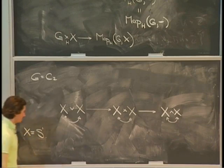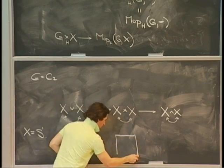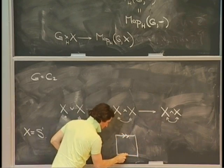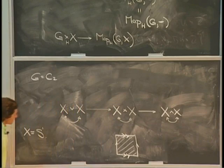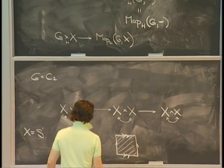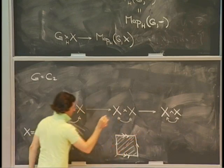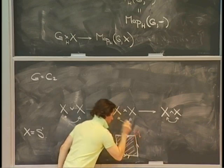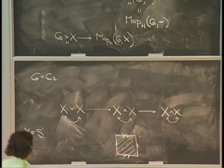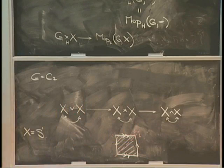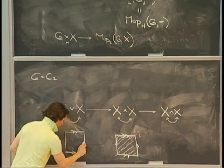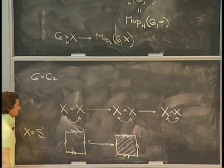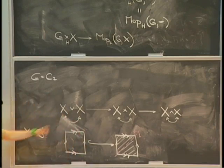So X cross X is the torus, and I'll draw it as the usual identification of the square, with the inside filled in. What's the group action? The group action is the one that just flips over the diagonal. That's a description of S^1 cross S^1 with the flip action. And S^1 wedge S^1 is the boundary sitting inside there.